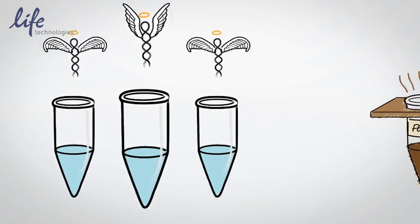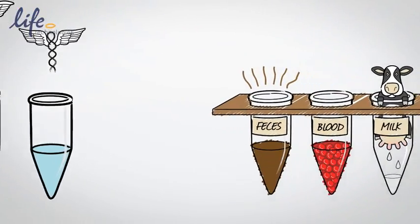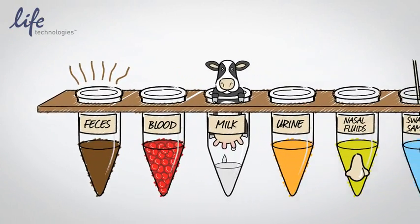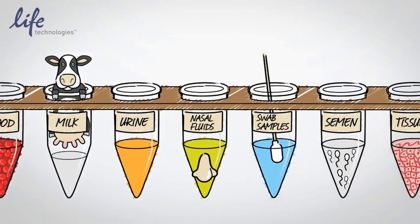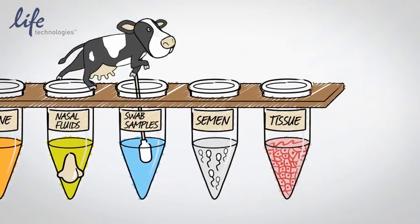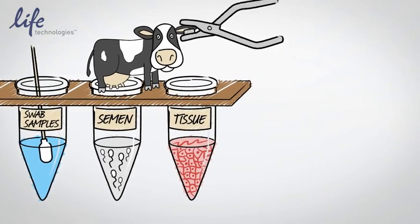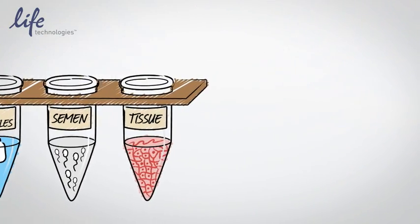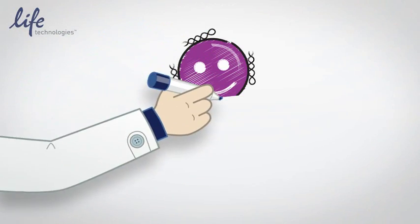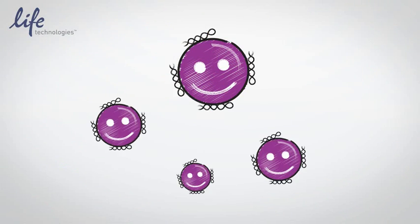Whether the source is from biological samples like feces and whole blood, biofluids such as milk, urine, nasal fluids, swab samples, semen, or typical animal tissues, MagMax enables the effective recovery of nucleic acids from diverse samples.